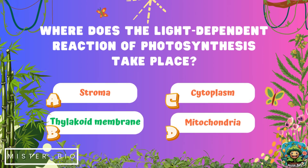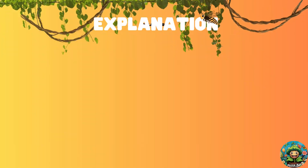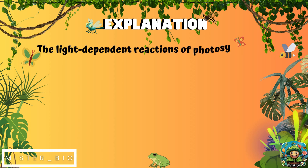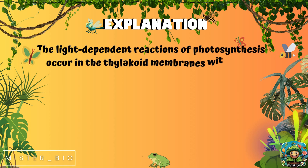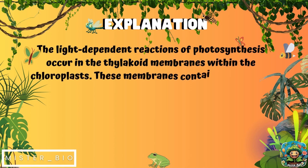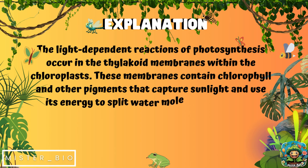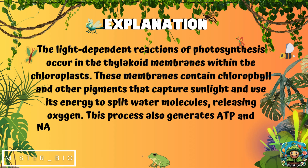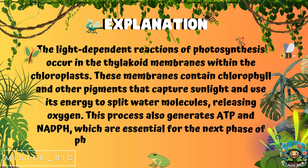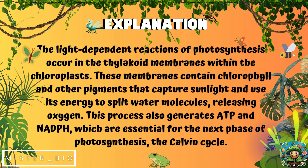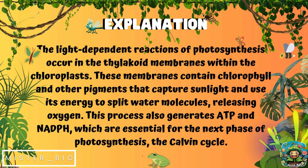The answer is B, thylakoid membrane. The light-dependent reactions of photosynthesis occur in the thylakoid membranes within the chloroplast. These membranes contain chlorophyll and other pigments that capture sunlight and use its energy to split water molecules, releasing oxygen. This process also generates ATP (adenosine triphosphate) and NADPH (nicotinamide adenine dinucleotide phosphate), which are essential for the next phase of photosynthesis — the Calvin cycle.